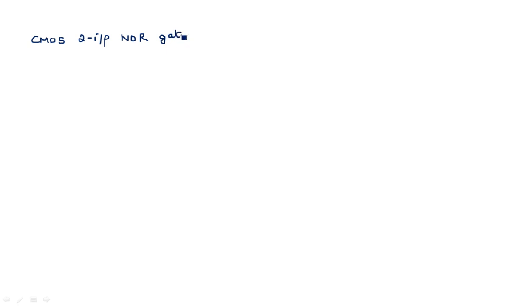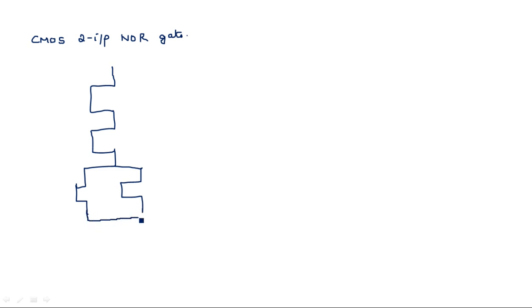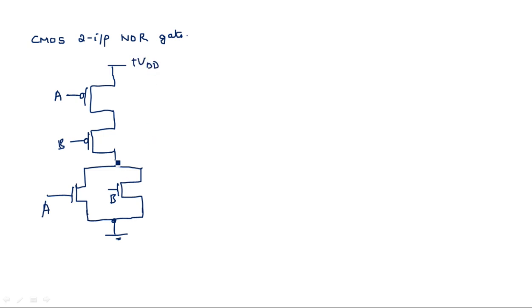Now we will see the CMOS circuit diagram for the two-input NOR gate. These are PMOS transistors with inputs A and B, and these are NMOS transistors with inputs A and B. VDD is at the top, and the output Y is taken from the center node between the PMOS and NMOS networks, giving Y is equal to A plus B bar.